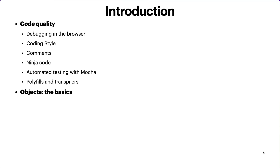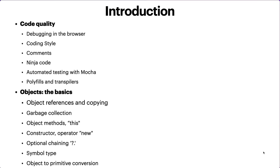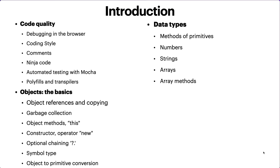Next, we're going to talk about objects — a very interesting complex data type. We'll cover object references and copying, garbage collection, basic ideas, object methods, constructors, the 'new' operator, optional chaining, and the symbol type. We'll also look at object-to-primitive conversion, and then dive into data types: methods of primitives, string methods, number methods, and specifically numbers, strings, and arrays with array methods.